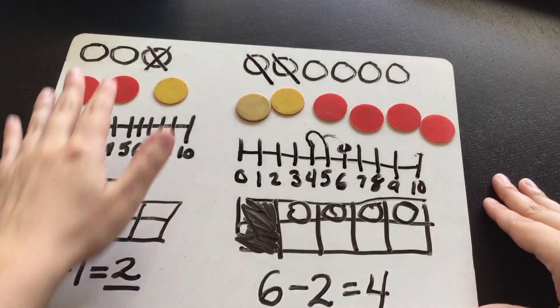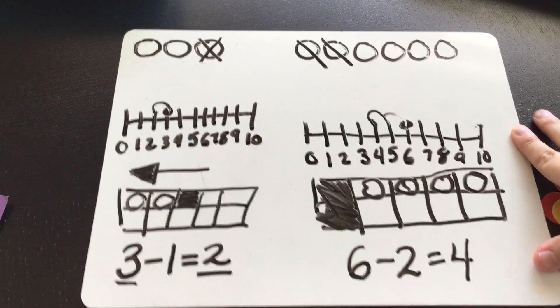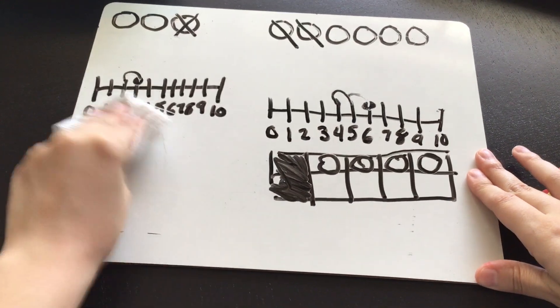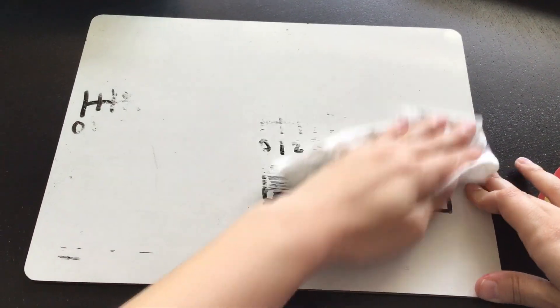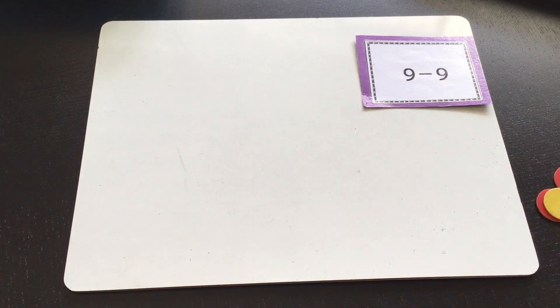Let's do one more, and then you can practice at home. In our next video, we'll talk about subtraction story problems and what those look like. Subtraction story problems are similar to addition ones, except in these ones, instead of being given something or getting more of something, things are being taken away, lost, or eaten. Let's try a hard one: nine take away nine.